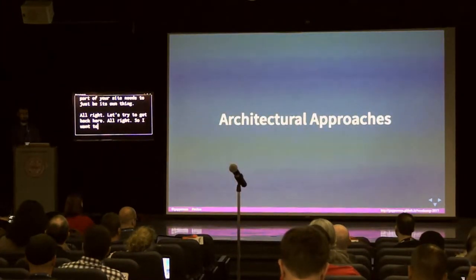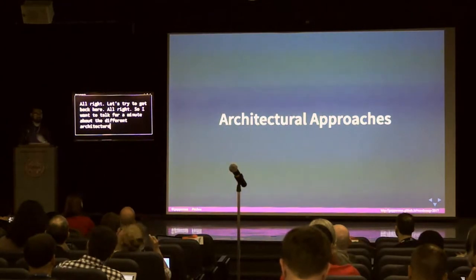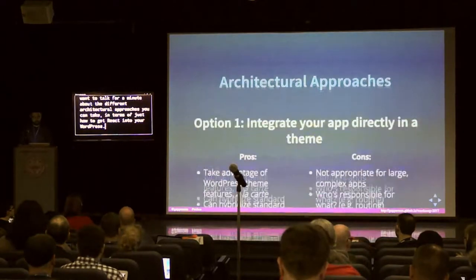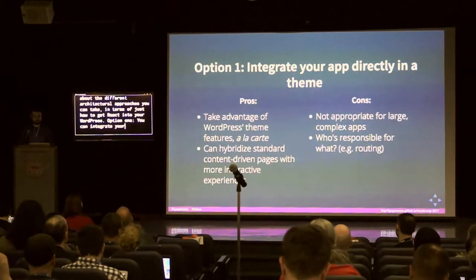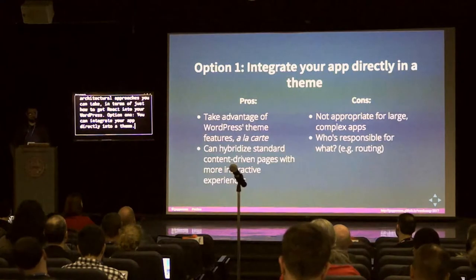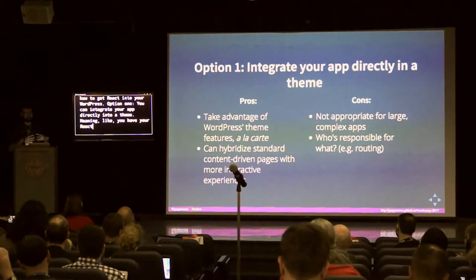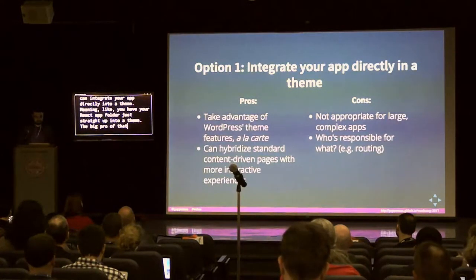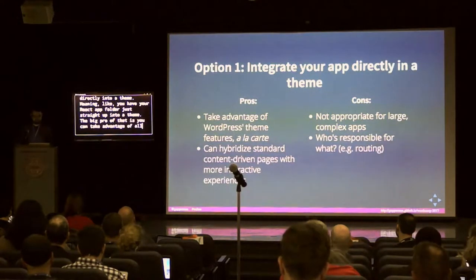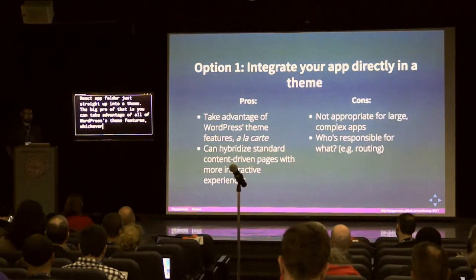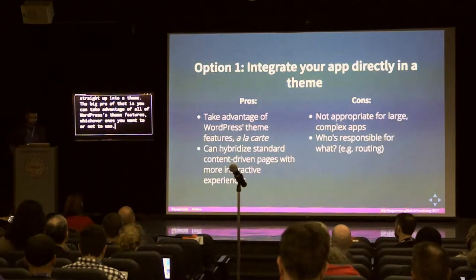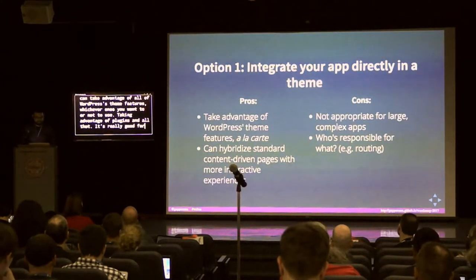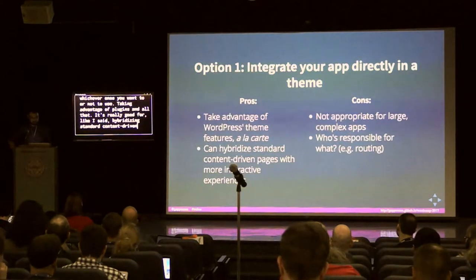I want to talk for a minute about the different architectural approaches to get React into your WordPress. Option one: you can integrate your app directly into a theme, meaning your React app folder sits straight inside a theme. The big pro is you can take advantage of all of WordPress's theme features, plugins, and all that. It's really good for hybridizing standard content-driven pages with more interactive experiences like that map I just showed you.